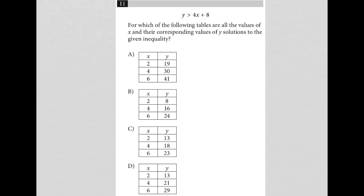So this question starts off by providing us with this inequality here, y is greater than 4x plus 8. It goes on to say, for which of the following tables are all the values of x and their corresponding values of y solutions to the given inequality? Okay, so it looks like in every case, I have the same x values, 2, 4, and 6, but of course, I have different accompanying y values for each of those scenarios.